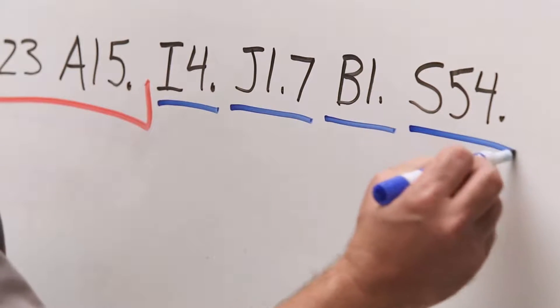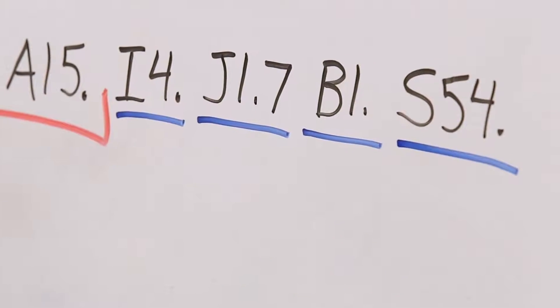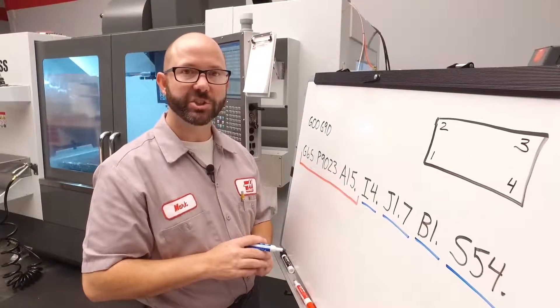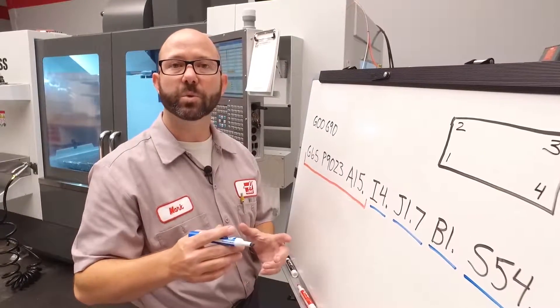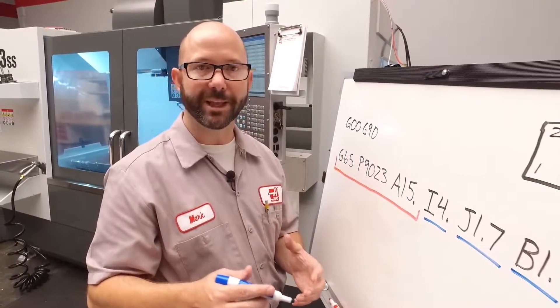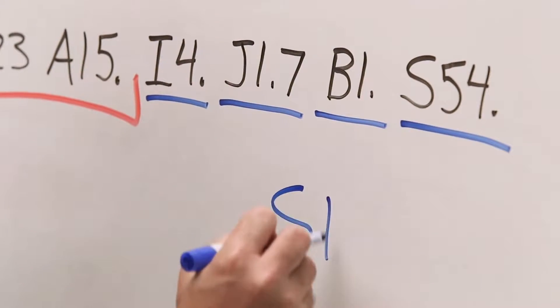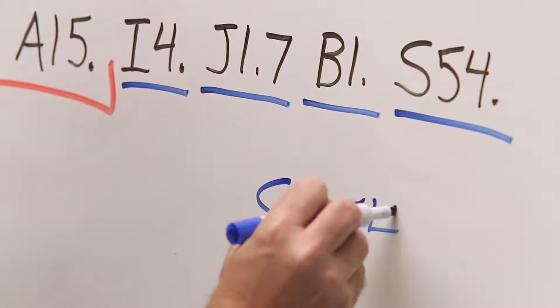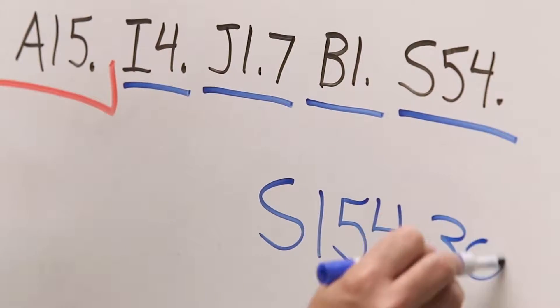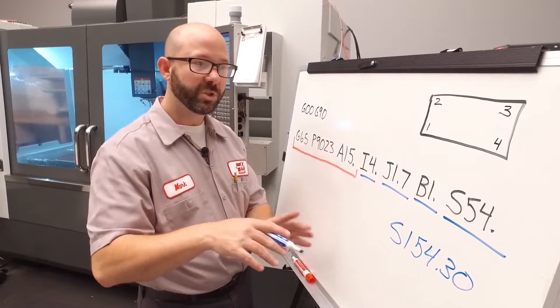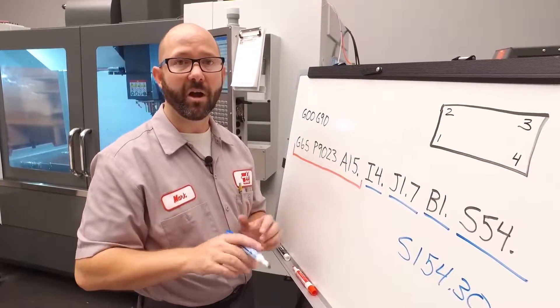This is it, our S value, S54 decimal point. This means that we're gonna write to work offset G54. If you wanted to write to an extended work offset, like G154P30, we would just use an S154.30. If you just wanna check an angle and you don't wanna write to any work offset, you can just leave the S value off altogether.